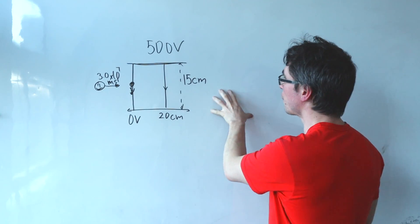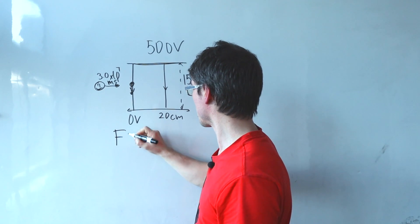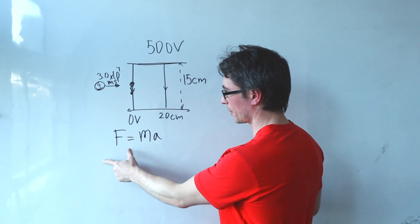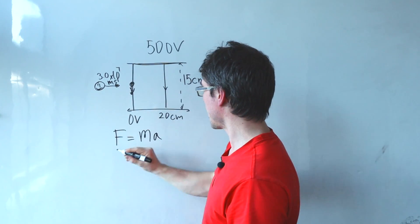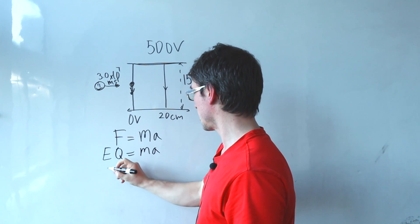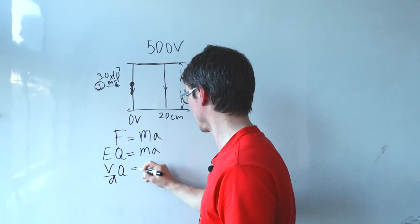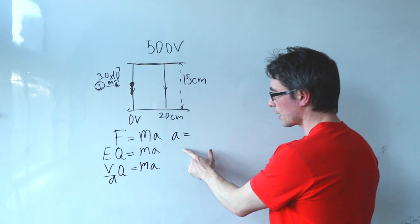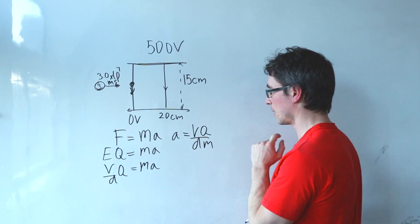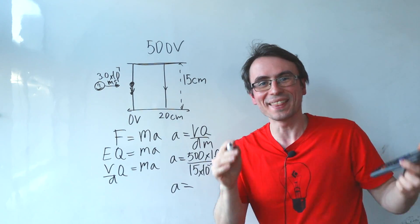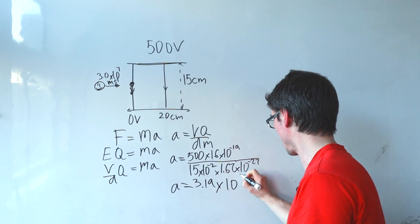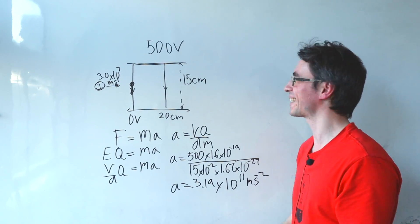We can calculate the vertical acceleration just using the fact that the net force, discounting gravity for this question, will be equal to mass times acceleration. Now the electrical force will be equal to EQ which is equal to MA. Now the electric field is V over D which is equal to MA, meaning that the acceleration will be equal to VQ divided by DM. And that's going to be a huge number again around 3.19 times 10 to the power of 11 meters per second squared.